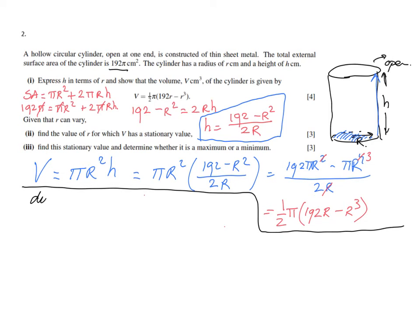So what are we going to do? We're going to find the derivative of V and set that equal to zero. The derivative is ½π, and inside those brackets 192r becomes 192 and r³ becomes 3r².